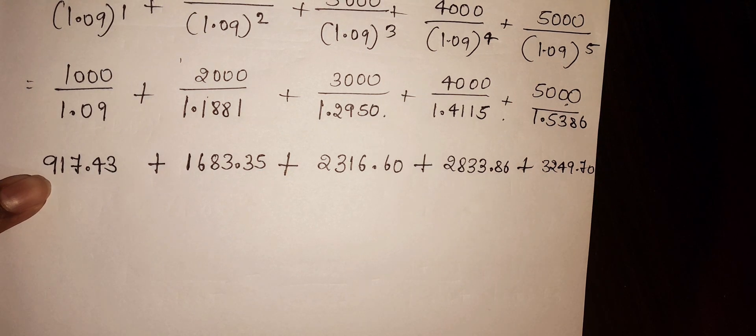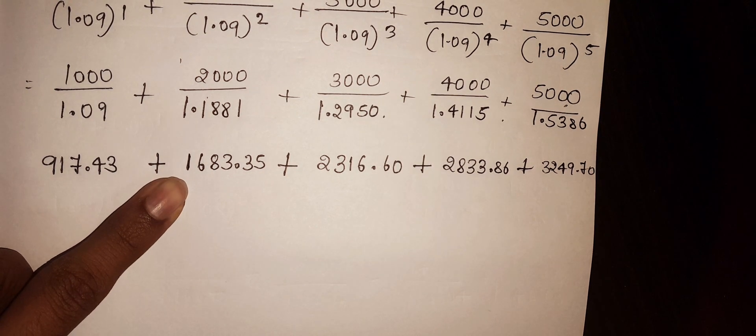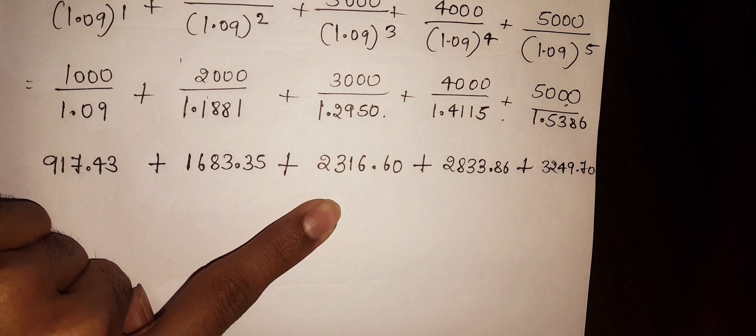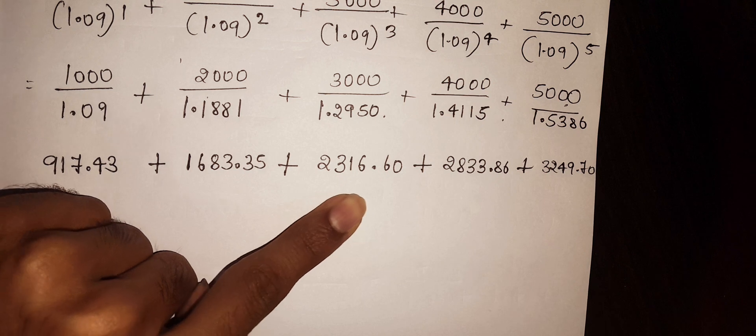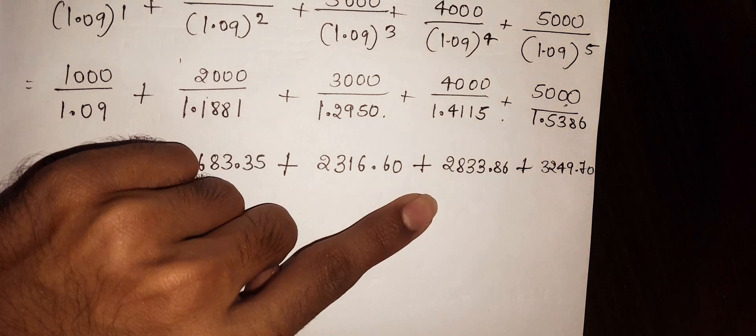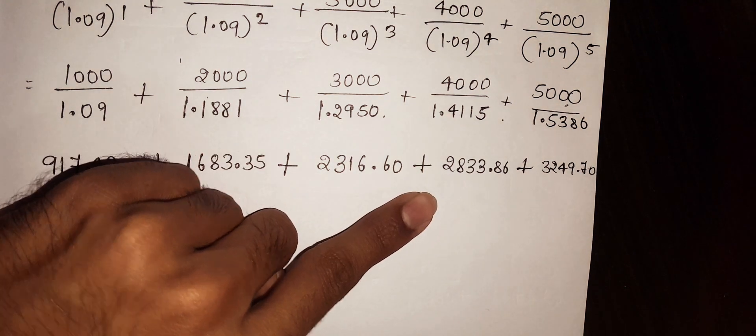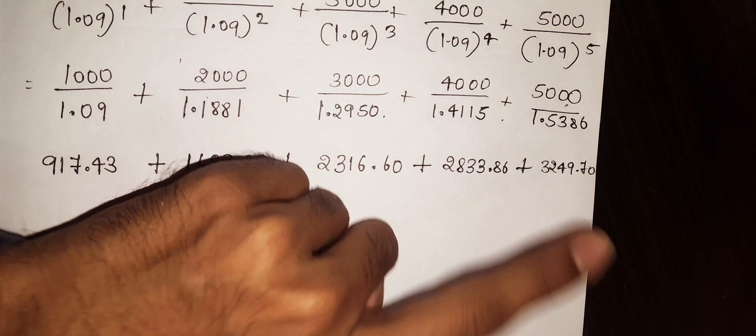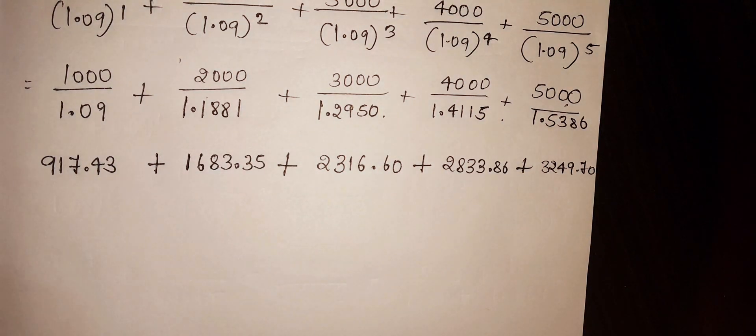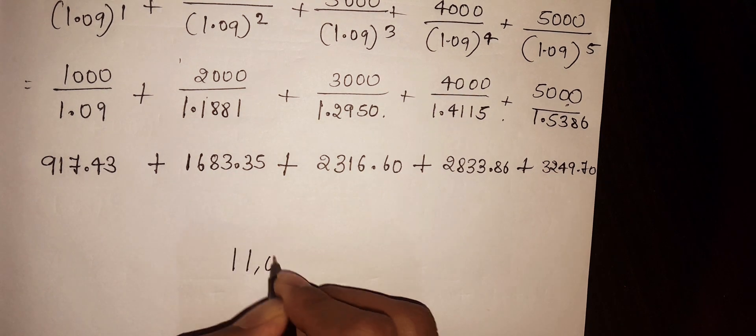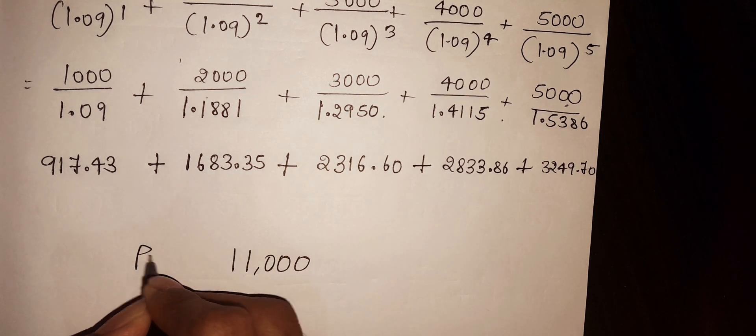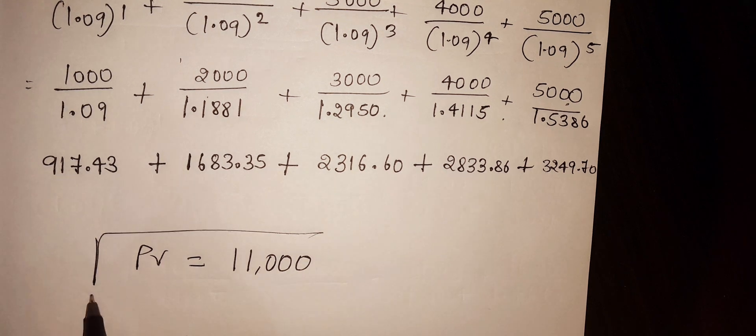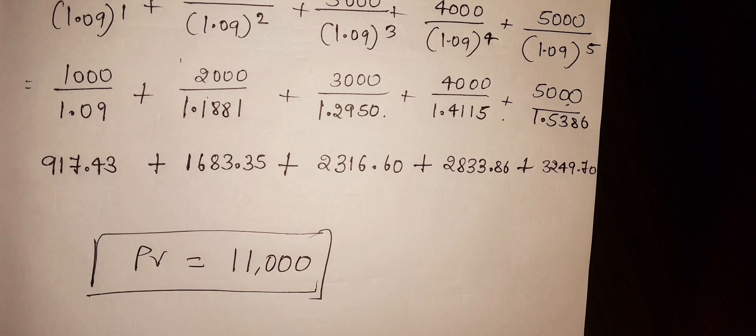Now add all these: 917.43 plus 1683.35 plus 2316.60 plus 2833.86 plus 3249.70. This is our present value. Our present value is 11,000 rupees.